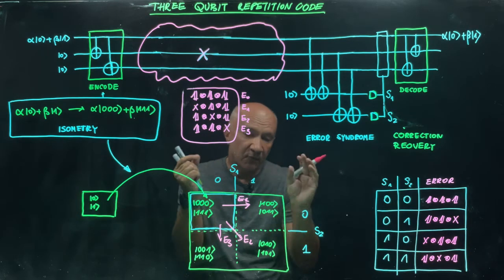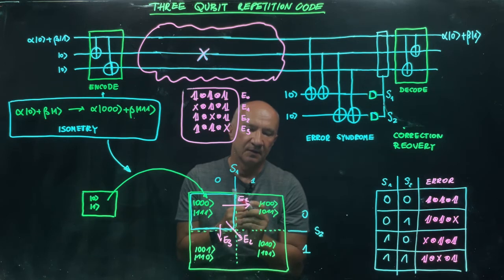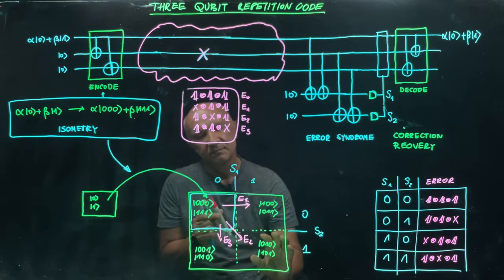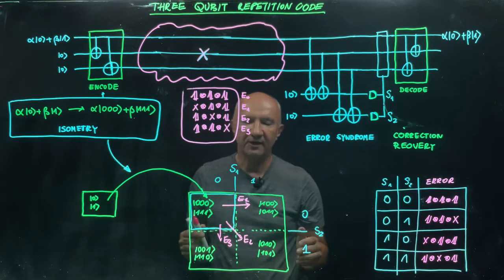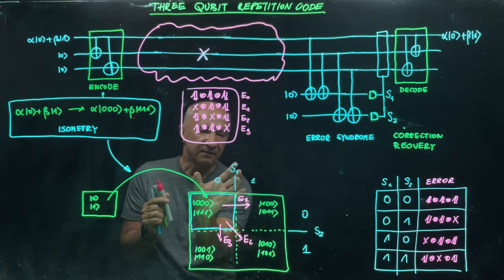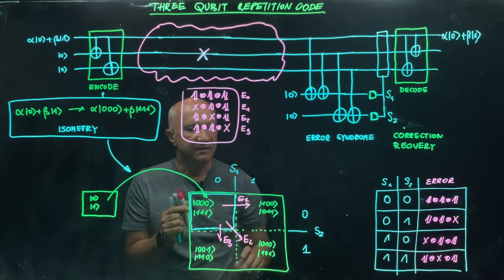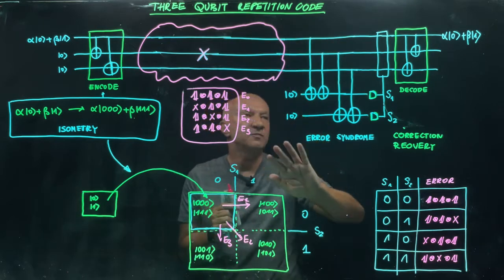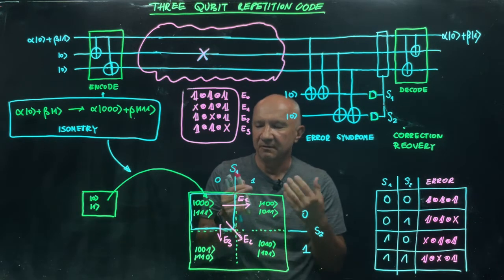Once we know which error happened, we can reverse the whole operation. If we figure out it was E2 that happened, we simply apply a bit flip to the second qubit, reversing the error and returning to the coding space. To find out which error happened, we perform two measurements. These measurements differentiate between four-dimensional subspaces and are called the error syndrome — they tell us what actually happened in the system.